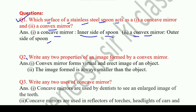Question 2: Write any two properties of an image formed by a convex mirror. Answer: First, a convex mirror forms a virtual and erect image of an object. Second, the image formed is always smaller than the object.